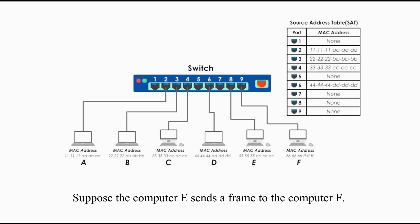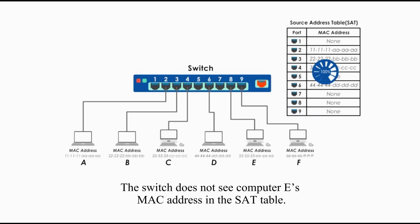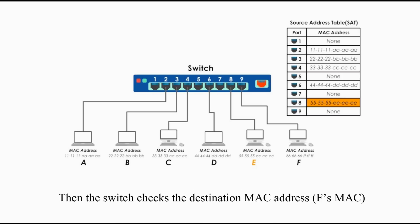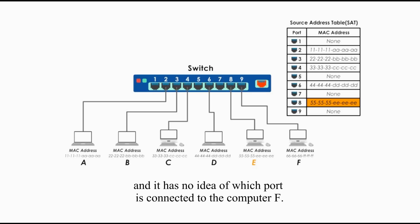Let's see an example. Suppose computer E sends a frame to computer F. When the switch receives the frame, it checks the source MAC address first. The switch does not see computer E's MAC address in the SAT table, so the switch updates the table by adding computer E's MAC address and associated port 8. Then the switch checks the destination MAC address, which is F's MAC address. Again, the switch does not see F's MAC address in the table and has no idea which port is connected to computer F.